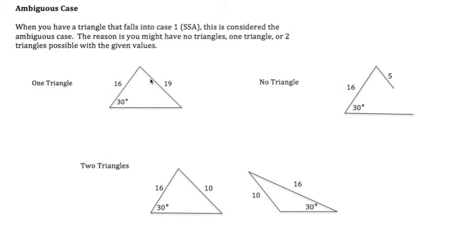It's kind of a pain because we have three different possibilities that can happen. We can have one triangle as our solution, we can end up doing everything and have no triangle because the piece is too short, or you can end up having two triangles, which is all kinds of fun there.